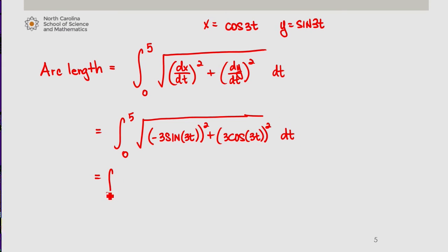This is the integral from 0 to 5 of the square root of 9 sine squared 3t plus 9 cosine squared of the integral from 0 to 5 of the square root of 9.